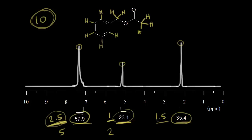If you multiply 1.5 by two, that gives us three. And obviously, five plus two plus three gives us 10. And 10 protons is how many protons that we need to account for for our molecule.